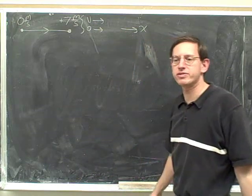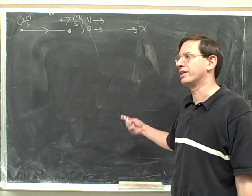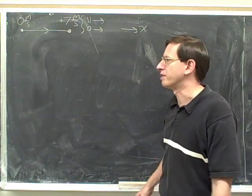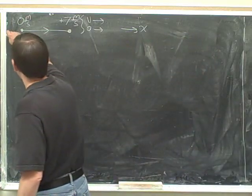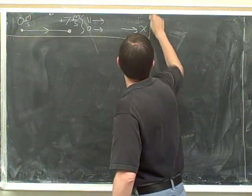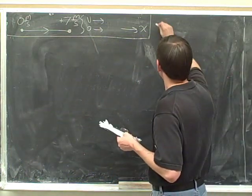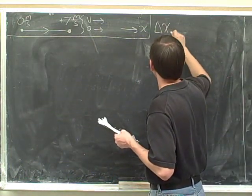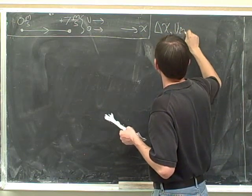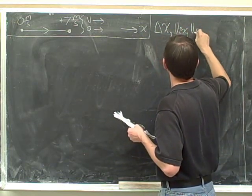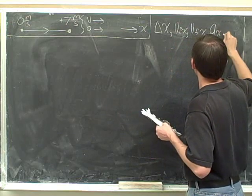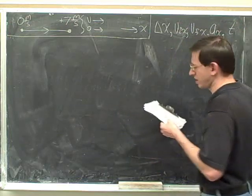We've already chosen our positive direction. Step 3, breaking into components, doesn't really apply to one-dimensional motions. Let's do our step 4, the kinematics variables. Delta x, the initial x, the final x, a sub x, and time.